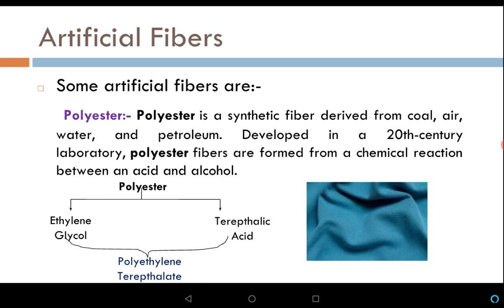Polyester is composed of two terms: 'poly' meaning many, and 'ester' meaning a compound formed by mixing an alcohol with an acid. Polyester is a synthetic fiber derived from coal, air, water, and petroleum, developed in the 20th century. Polyester fibers are formed from a chemical reaction between an acid and an alcohol — specifically ethylene glycol (the alcohol) and terephthalic acid (the acid) — which combine to form polyethylene terephthalate, the basic component of polyester.